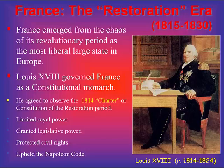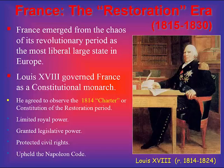France emerged from the chaos of its revolutionary period as one of the most liberal large states in Europe. Louis XVIII came in knowing that if he tried to bring back the old regime, it wouldn't work. So he governed France as a constitutional monarch, agreeing to observe the 1814 Charter — the Constitution of the Restoration Period — though he tried to be one of his own making.